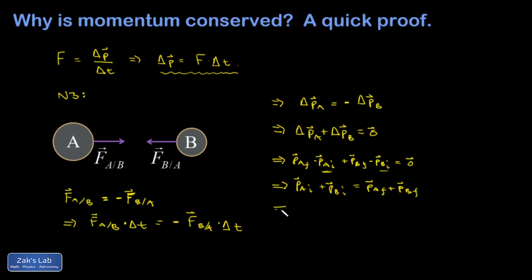And if you want, you could express the left-hand side as the total initial momentum, P net initial. The right-hand side is the total final momenta added together. So there it is. It's our second conserved quantity in physics. We already had energy. Now we have momentum.